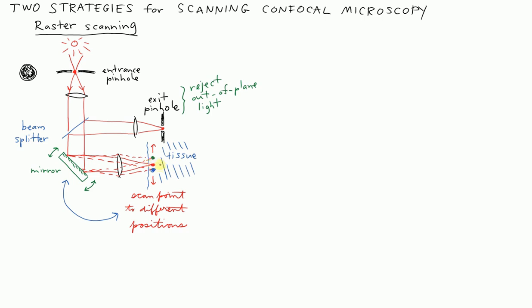Light scattering from that location will also travel back through the sample but will also be out-of-focus at the pinhole and a lot of that light will be blocked. So only the light at a particular depth gets through the pinhole. That's the essence of confocal microscopy.